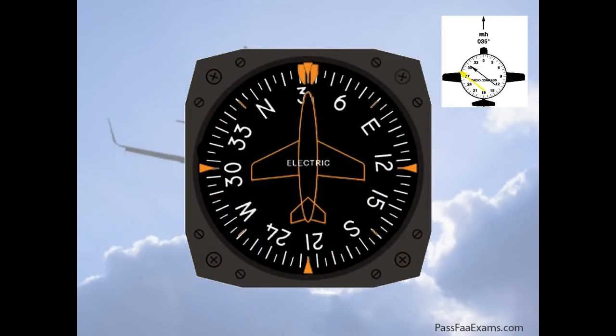Now for reference, I will also draw the NDB station and the airplane flying along on a heading of 035. As the airplane keeps flying on 035, the needle's head is going to drop on the same side of the DG as it is on.